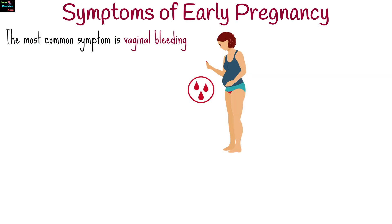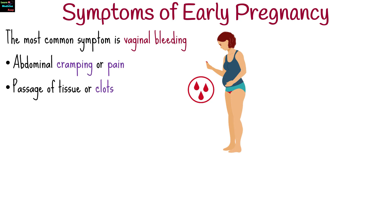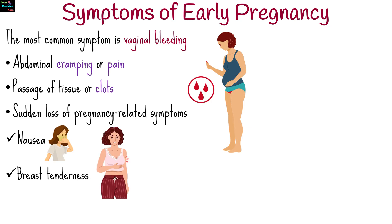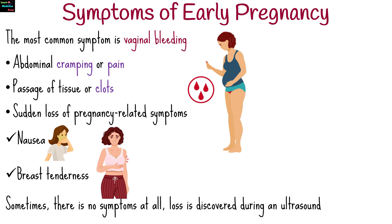The most common symptom is vaginal bleeding. Others include abdominal cramping or pain, the passage of tissue or clots, and a sudden loss of pregnancy-related symptoms such as nausea or breast tenderness. Sometimes there may be no symptoms at all, and the loss is discovered during an ultrasound.